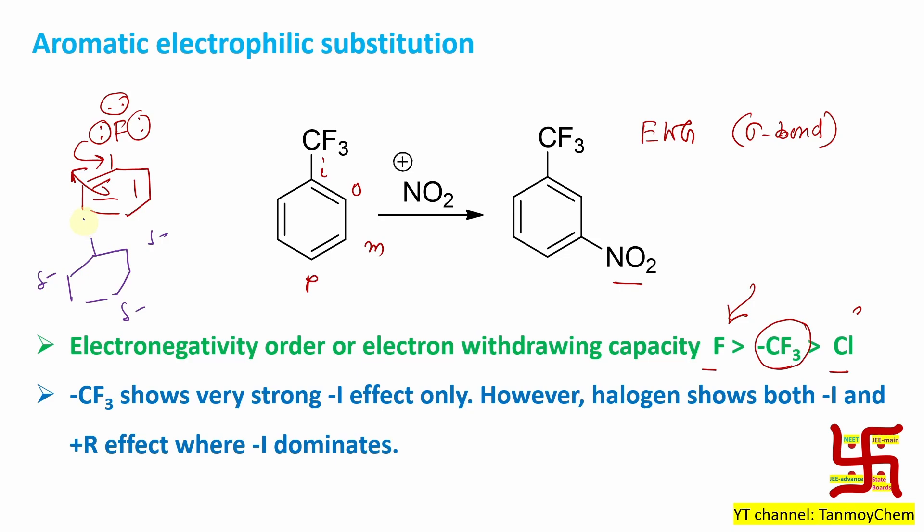That is the reason why this halobenzene shows aromatic electrophilic substitution at ortho and para positions. By the way, remember they are ortho-para orienting but deactivating because of the stronger electron withdrawing or minus I effect.